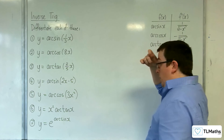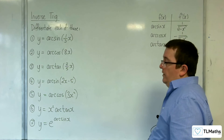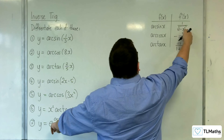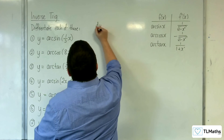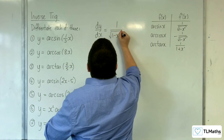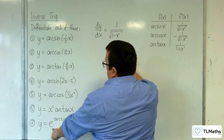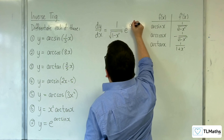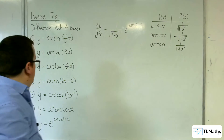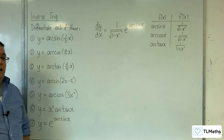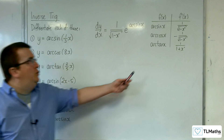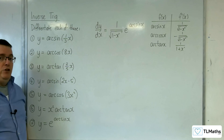Finally, number seven: y equals e to the power of arc sine of x. The derivative of the inside — arc sine of x — is one over the square root of one minus x squared, which comes out the front. E differentiates to itself, and the interior function stays the same. That is the derivative of number seven, and that is how we use our differentiation skills alongside these new derivatives.